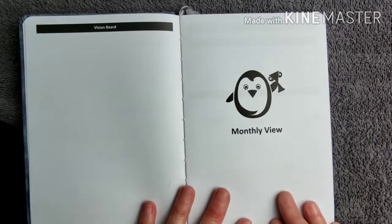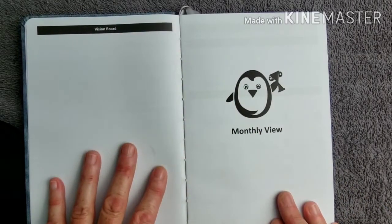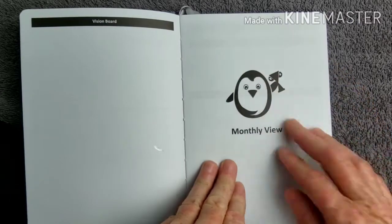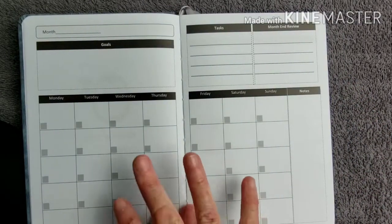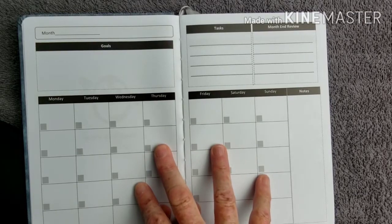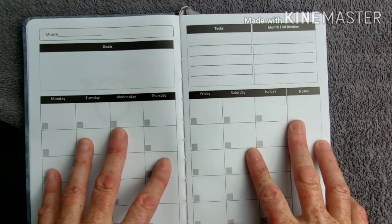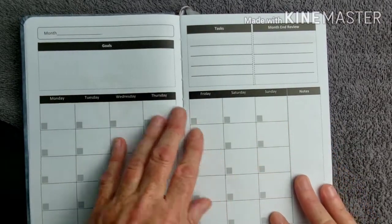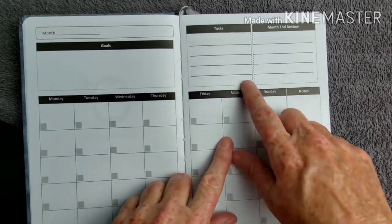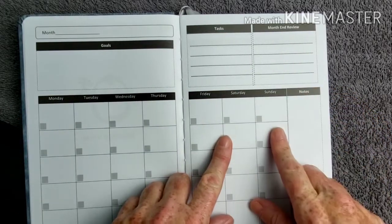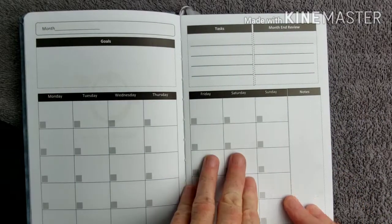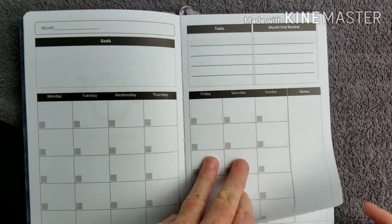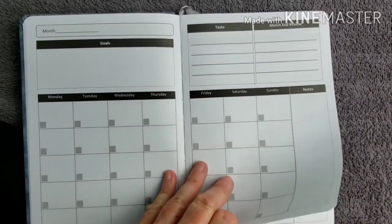So here's a vision board. You can just put in there whatever you want. And the monthly view. So as I said, it has six month views, which are two pages for each month. You write the month there and your goals, tasks, month end review, and it's undated. So you fill in the dates yourself and a little place for notes. So there's six of these.